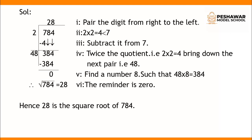Next, we find the number whose square is less than the given group. From the square table, 2×2=4 and 4 is less than 7. We try 3×3=9, but 9 is greater than 7, so we take 2. Write 2 as the quotient, and 2×2=4 below 7. Subtract: 7 − 4 = 3, and write the remainder 3.